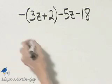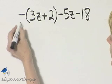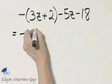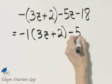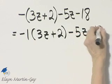Let's simplify this expression. Let's begin by writing this as negative 1 times the quantity 3z plus 2, minus 5z minus 18.